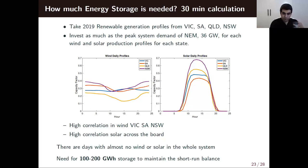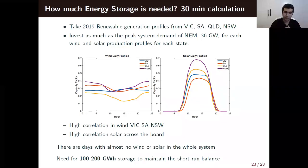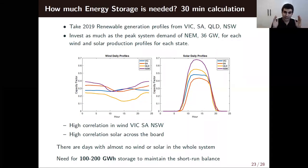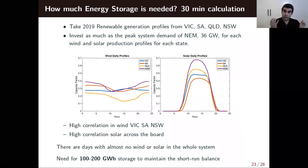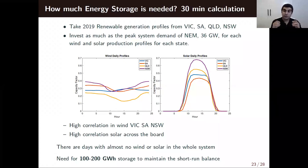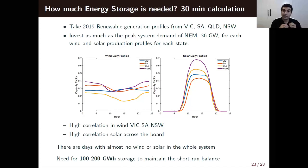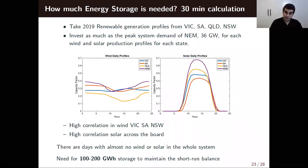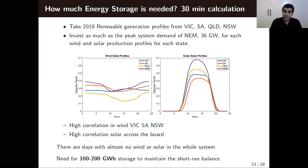Now I'll speculate about different policies and needs for energy storage. In this 30-minute exercise, I took 2019 renewable generation profiles from four regions — Victoria, South Australia, Queensland, and New South Wales — and invested as much as the peak system demand of NEM, which is around 36 gigawatts, for each wind and solar production profile per state. So that's 36 gigawatts times 8 — an immense capacity used as the baseline renewable energy generation. This is to understand: if you're thinking about 100% renewables, can we really reach there, and if so, how much energy storage might we need?